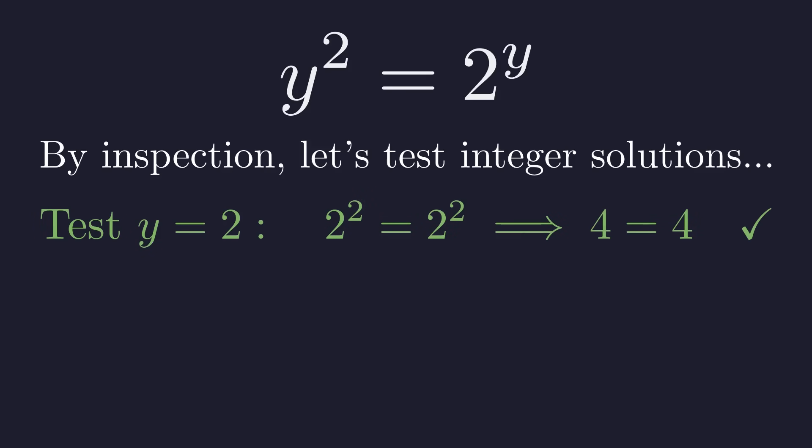Let's test if y equals 2 is a solution. The left side becomes 2 squared and the right side becomes 2 to the power of 2. This simplifies to 4 equals 4, which is true. So, y equals 2 is a solution.